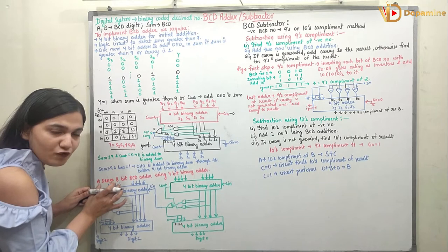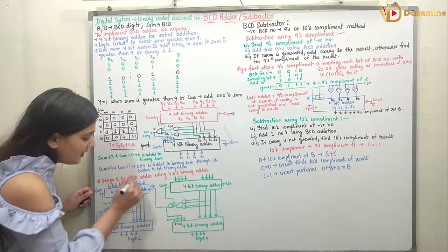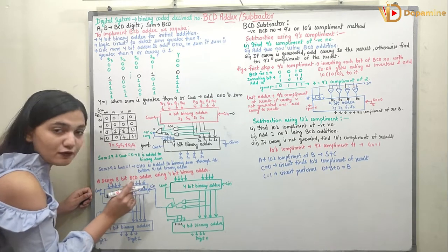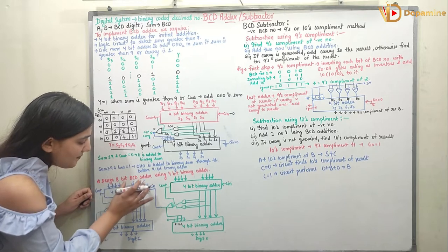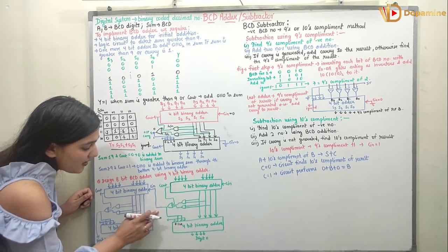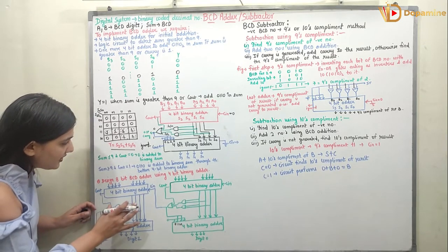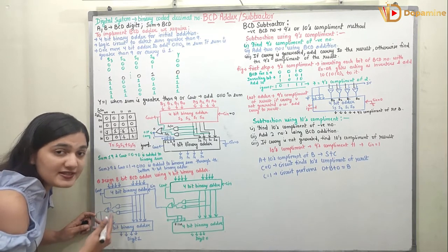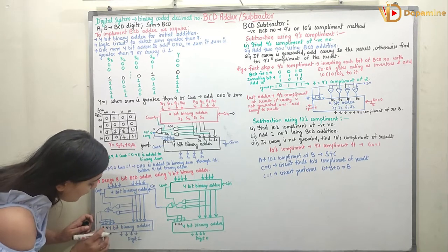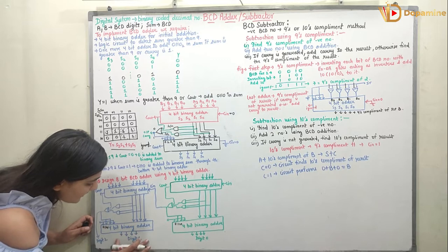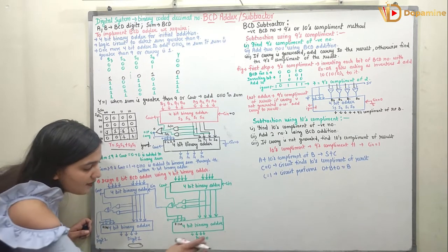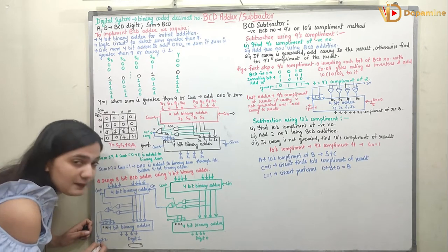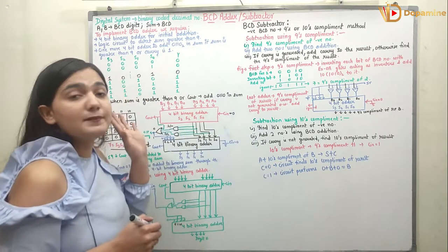I take the next higher 4 bits: A7, A6, A5, A4 and B7, B6, B5, B4. I add them considering the carry from the previous stage. This carry is transferred in, and again I check whether S3·S2 + S3·S1 is 1 or if carry is generated. If the sum is greater than 9, I again add 0110 to the sum and get digit 1 — the second group of 4 bits. From the two stages I get 4 bits each, and there is also an output carry which is the 9th bit.